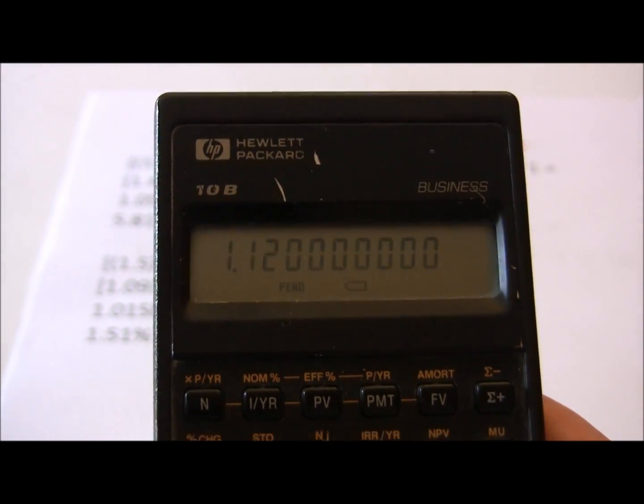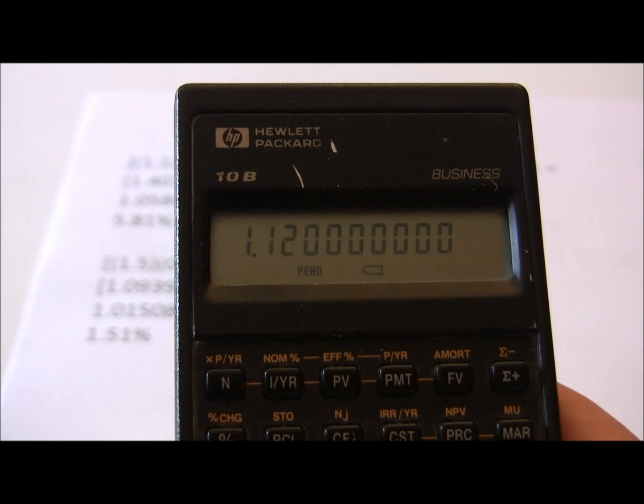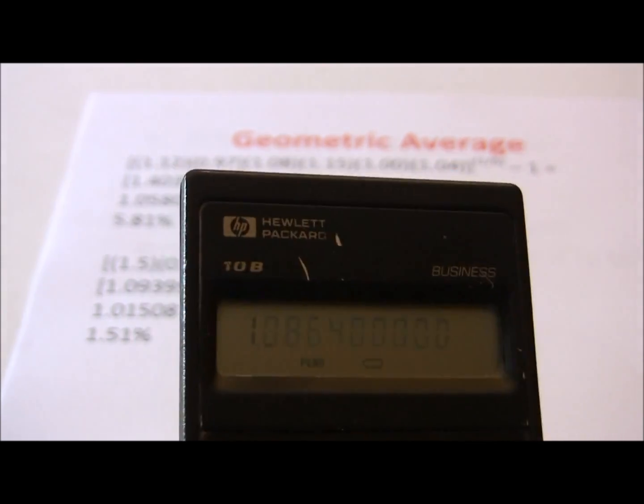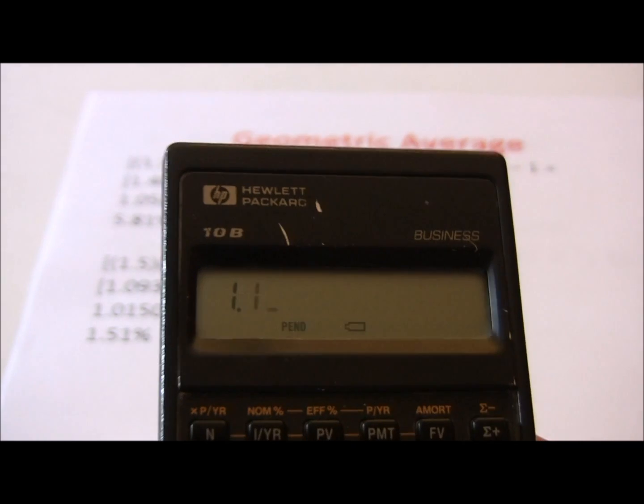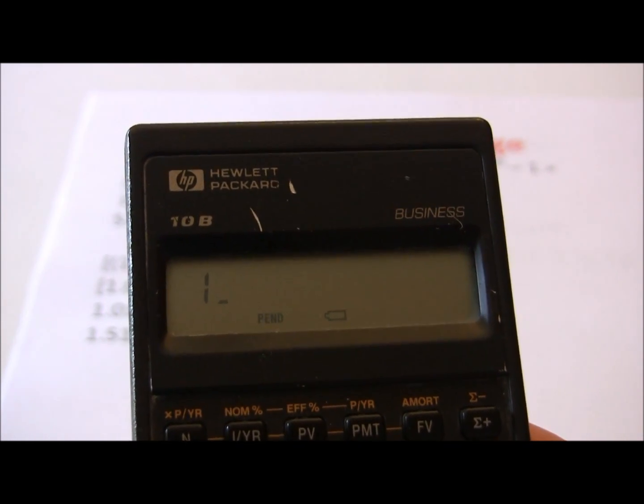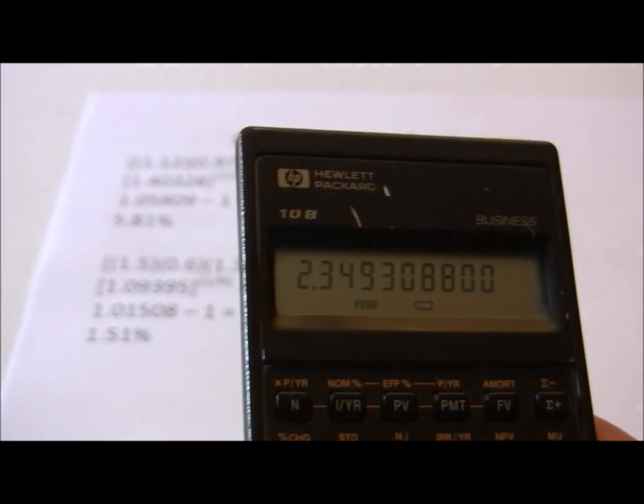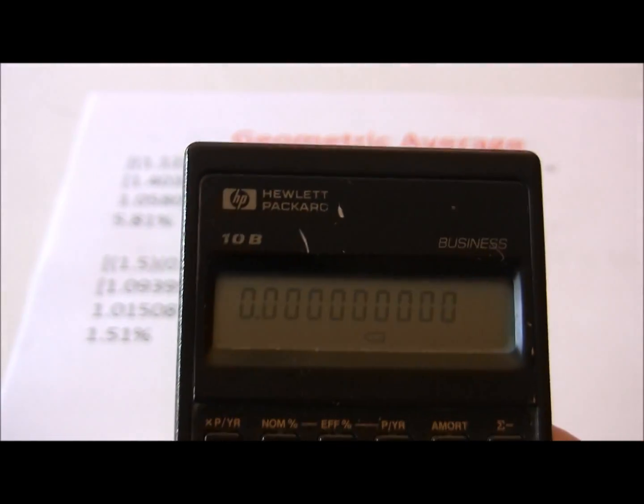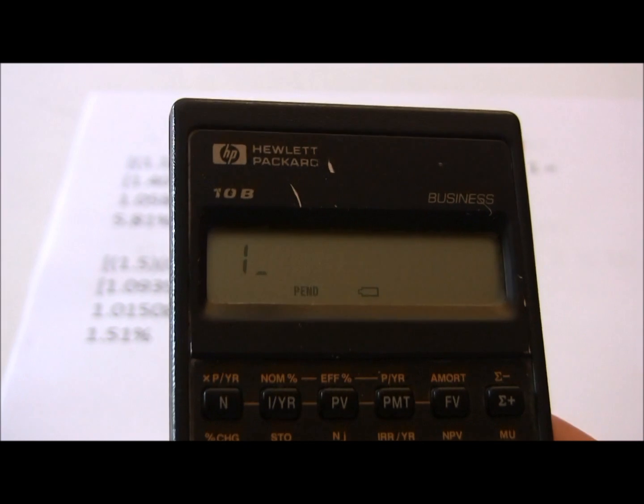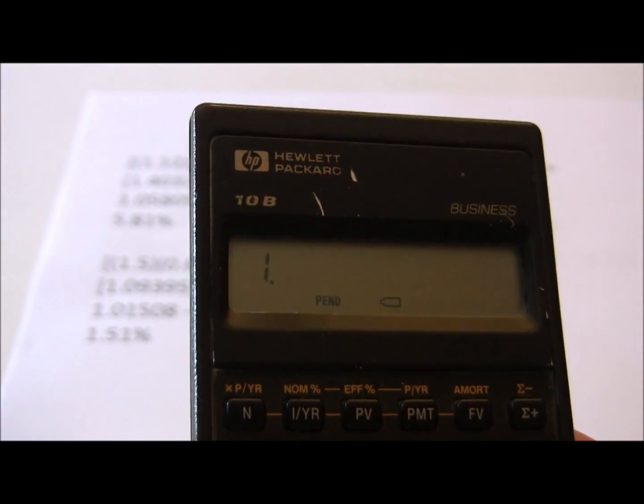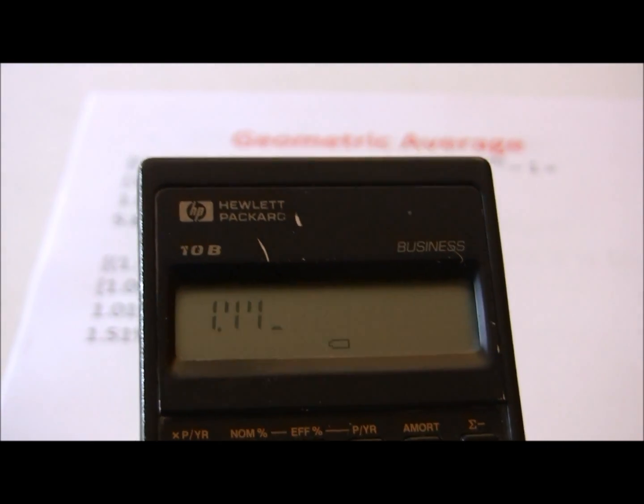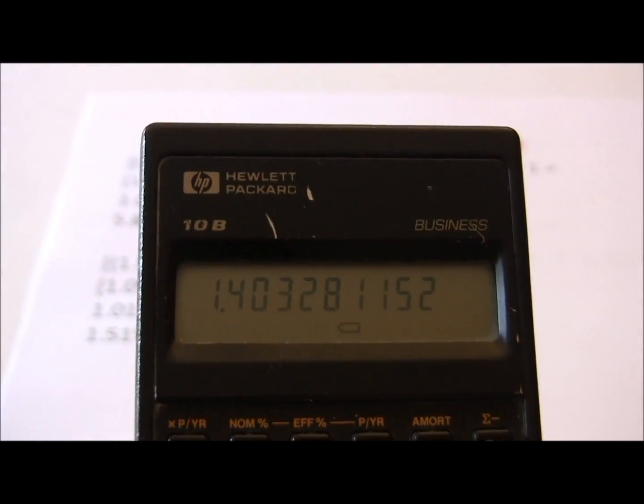Multiply by one plus the return in year two. In year two we had a negative 3% return, so one plus negative 3% is .97. Year three, we had an 8% return. Year four, we had a 15% return, so again one plus the return. Year five, we had no return, so that's just one. 1.12 times .97 times 1.08 times 1.15 times 1 times 1.04. That gives us 1.40328.